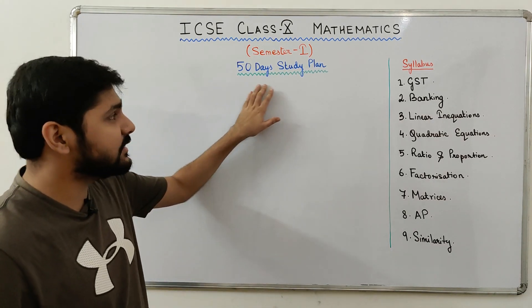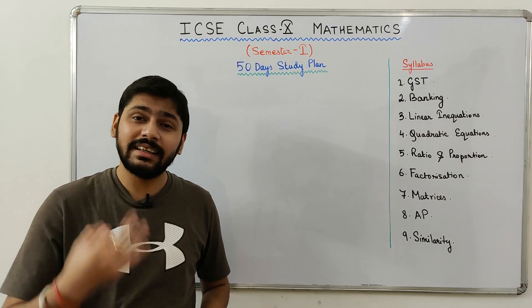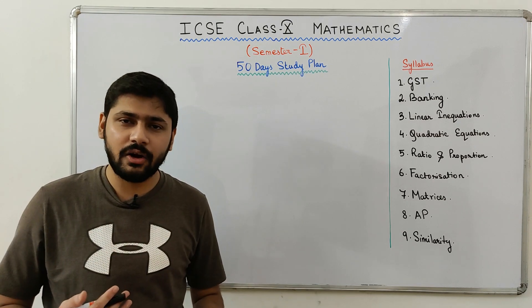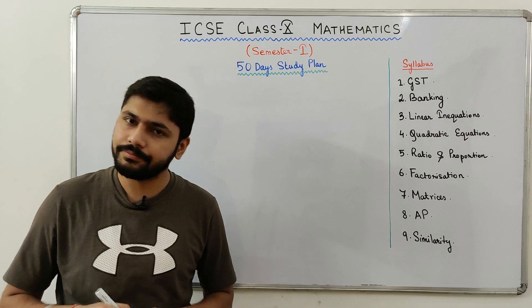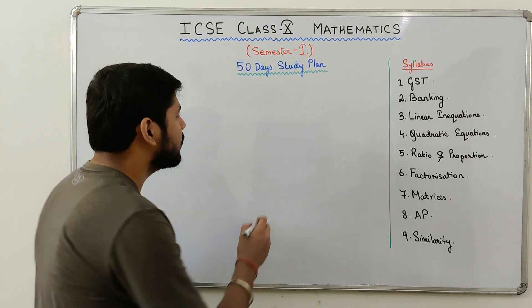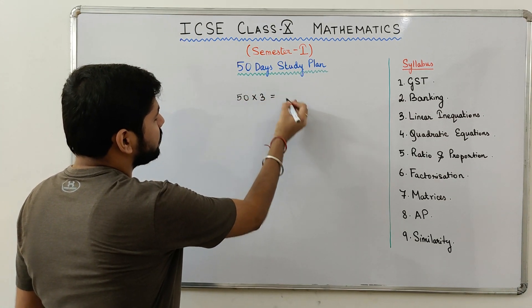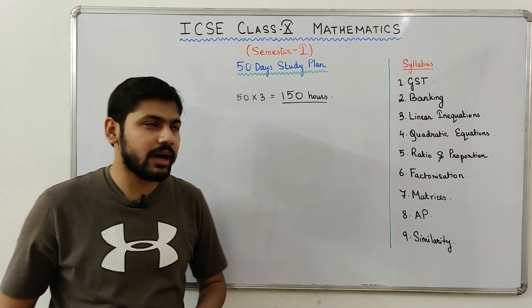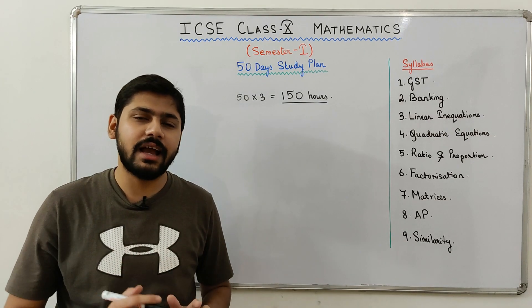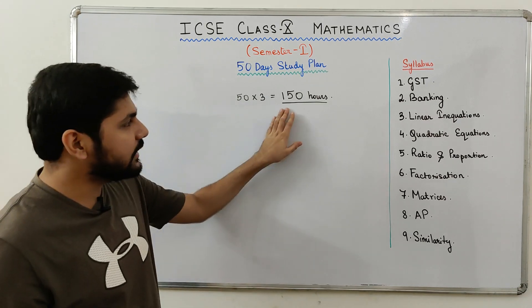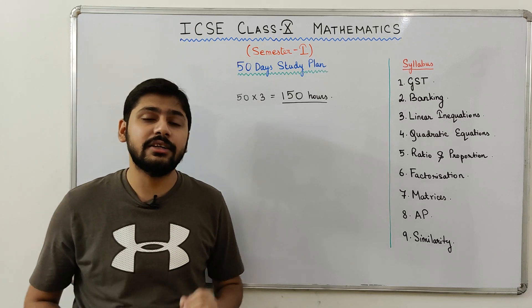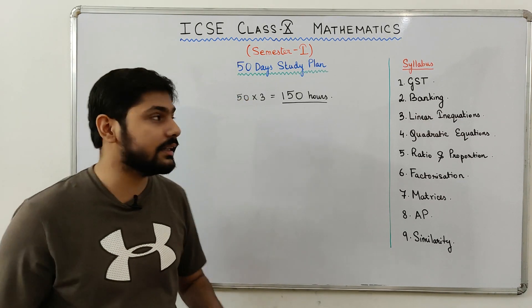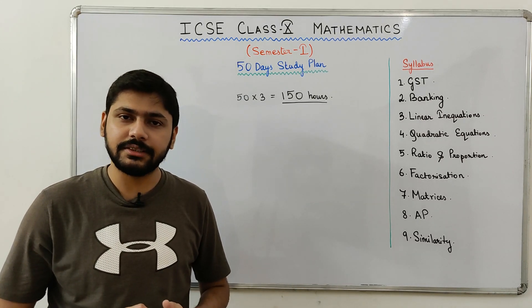As this is a 50-day study plan, let's take on average that you study mathematics for 3 hours every day — some days more, some days less, nothing is rigid. So 50 days into 3 hours gives you 150 hours for mathematics. You might think that's less than 10 days, but 150 hours is a lot of time. If you study all 150 hours properly with good concentration, you can easily score 40 out of 40 in the paper. Believe me.